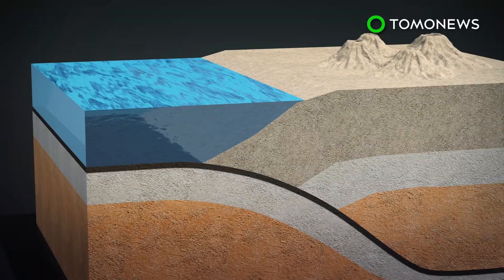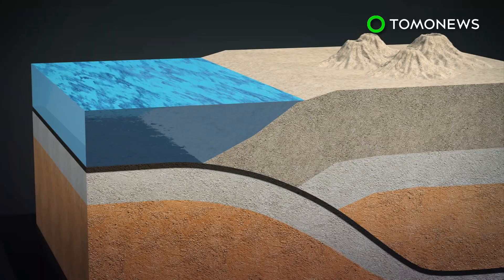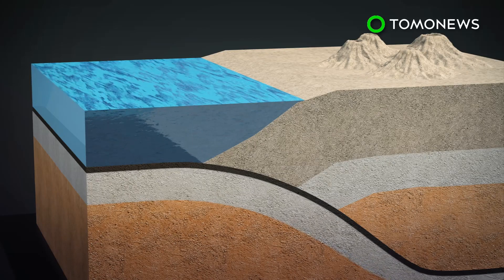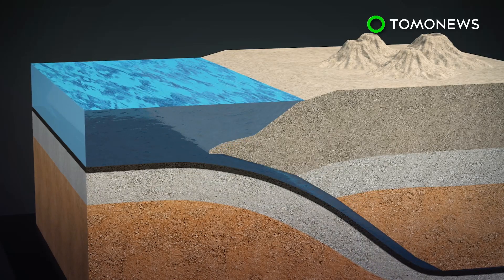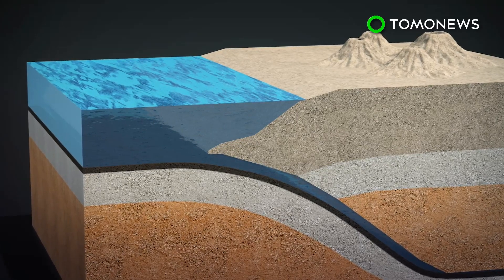Two tectonic plates meet at the Mariana Trench, where the huge Pacific plate is sliding under the tiny Mariana plate, allowing vast amounts of seawater to pour through the cracks into the Earth's crust 30 kilometers below the surface.